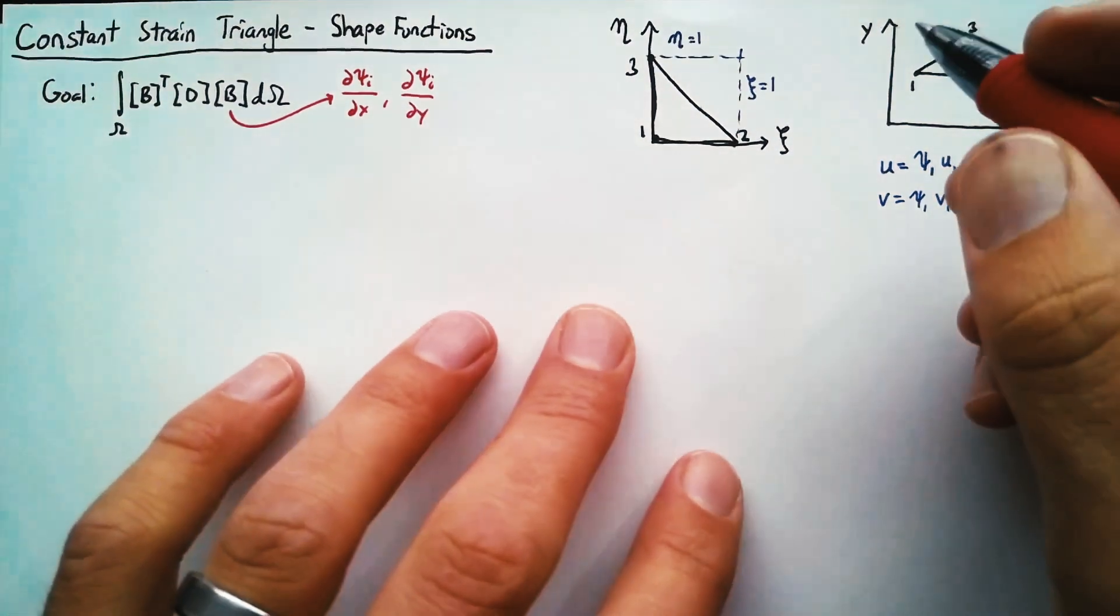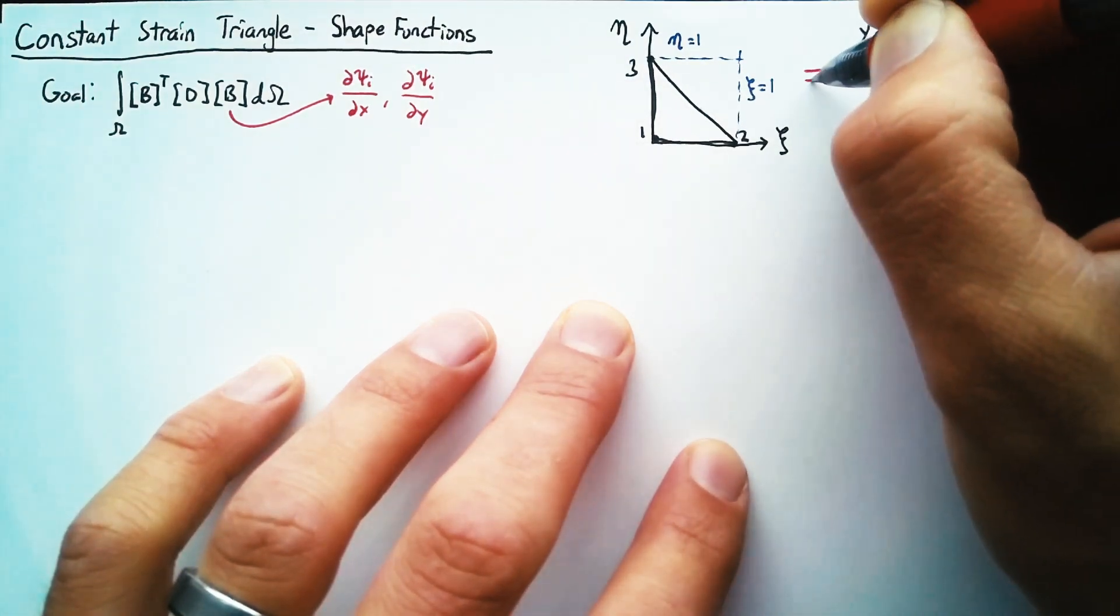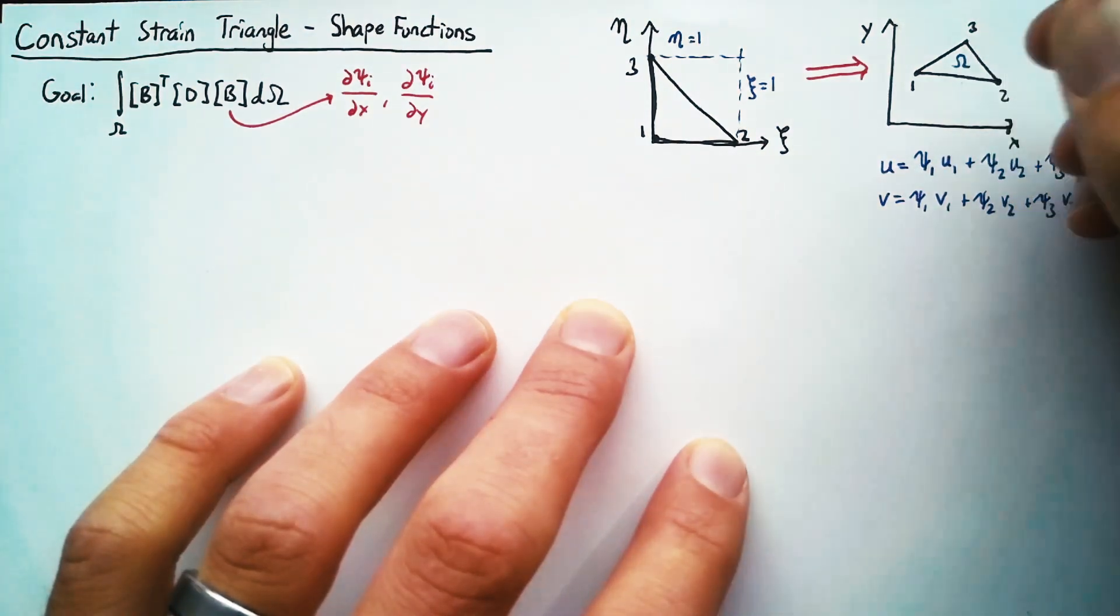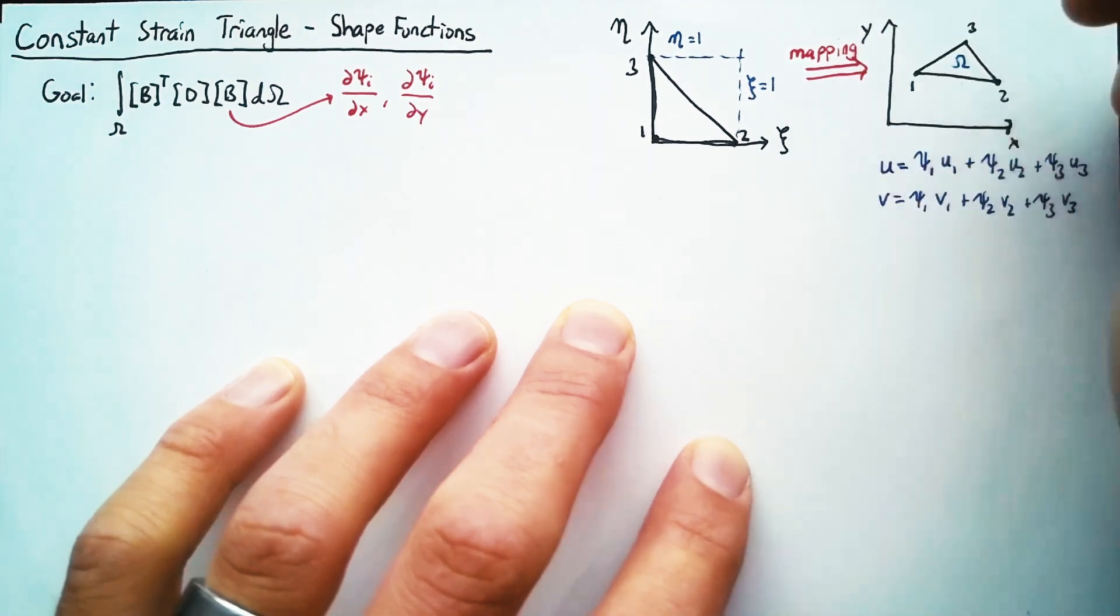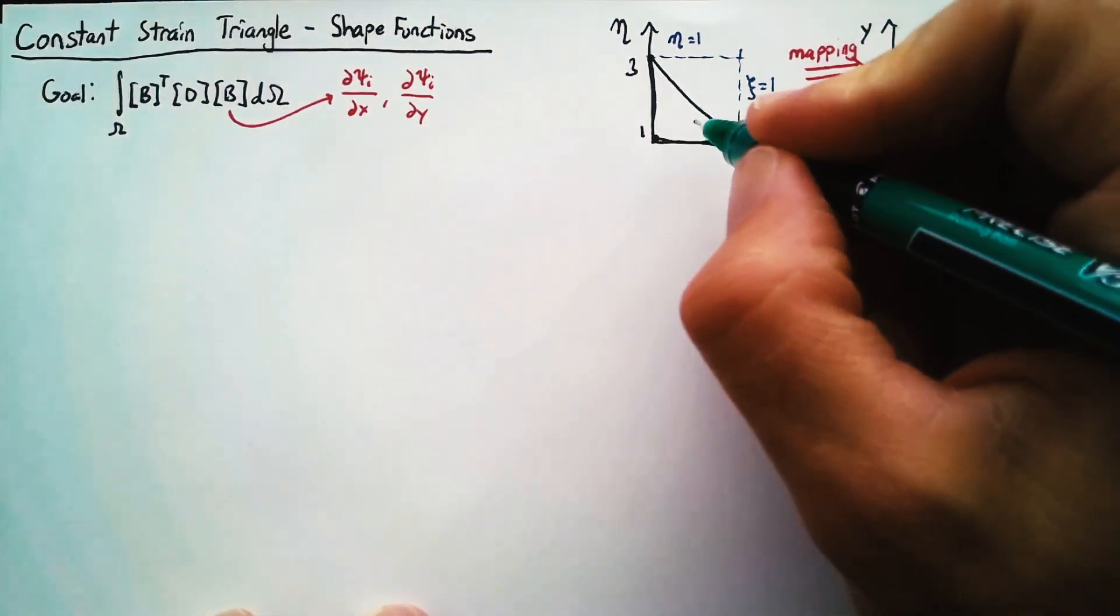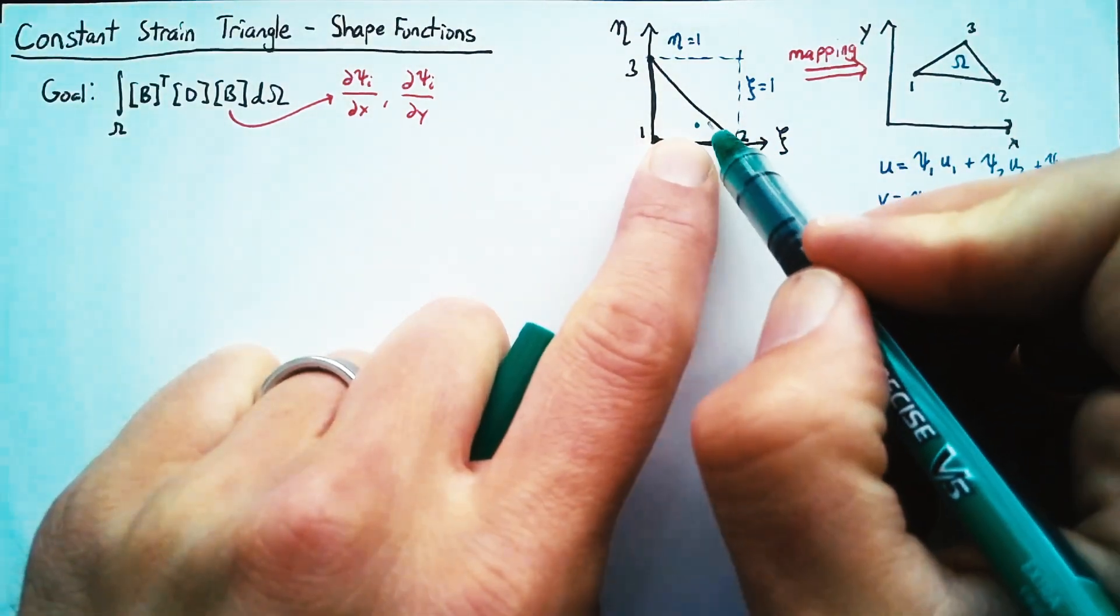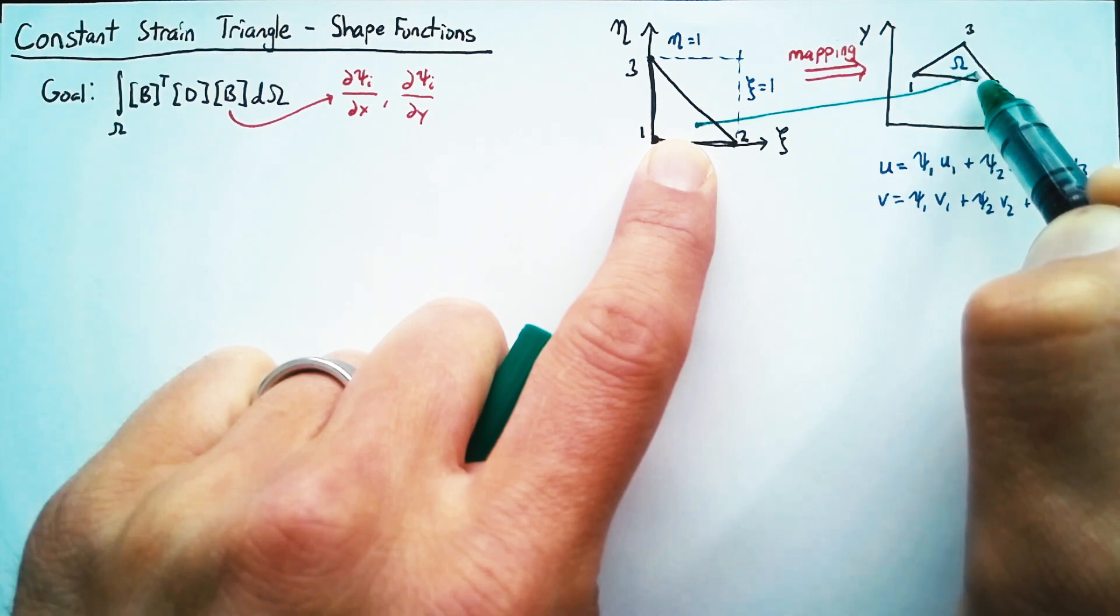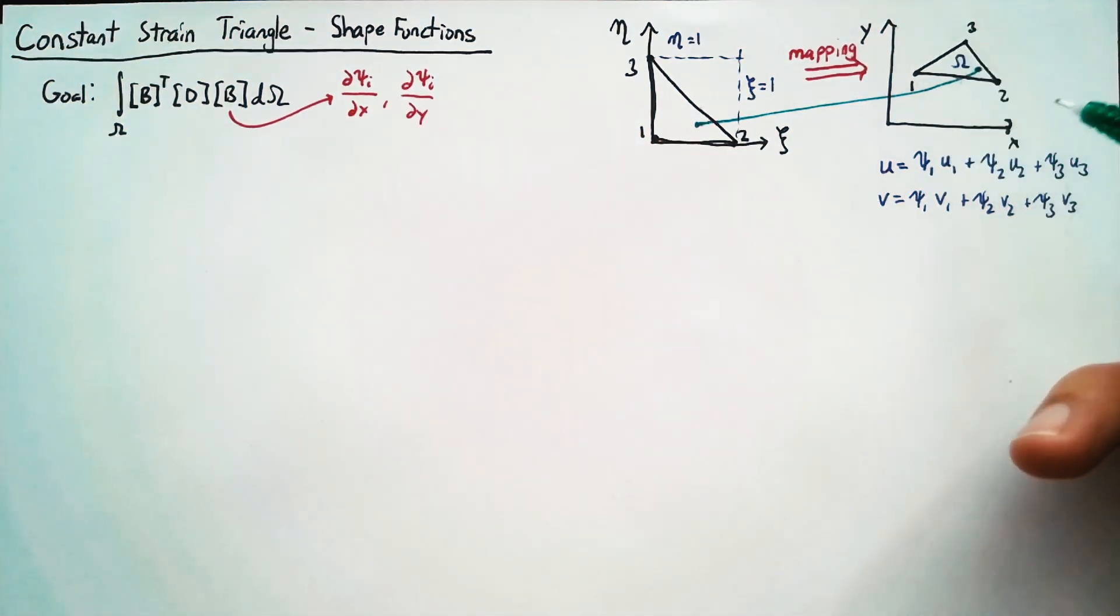Now here's the trick. We need to create a procedure to turn this simple triangle into this arbitrary triangle. Well, that procedure is known as mapping. So for every point on our simple triangle, we need to know how to find how that maps over to a point in the xy coordinate system.